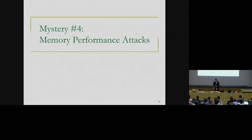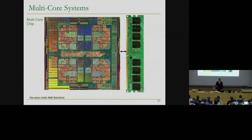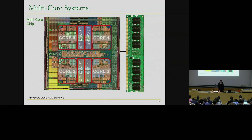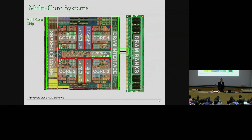The last and fourth mystery is something we call memory performance attacks. This was a paper published in 2007 or 2009. This is related to a multi-core chip where each core can execute a different workload, so you can get more parallelism. Here we have four cores, a bunch of caches, a DRAM controller, DRAM interface, and finally some DRAM which we use as main memory.